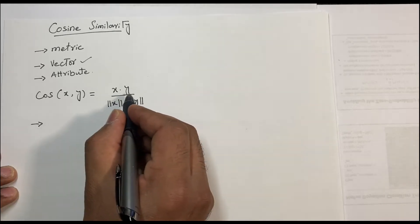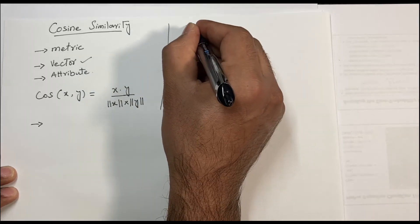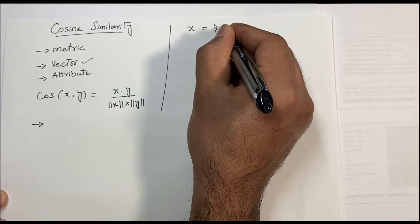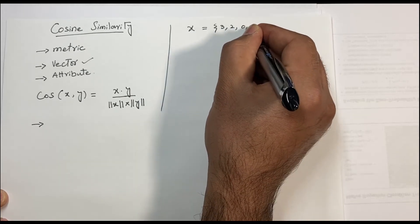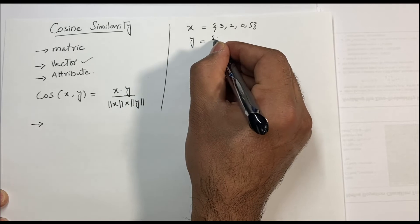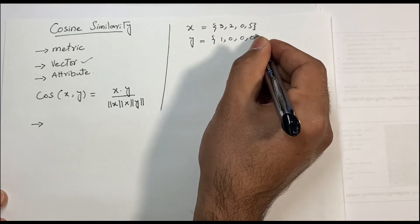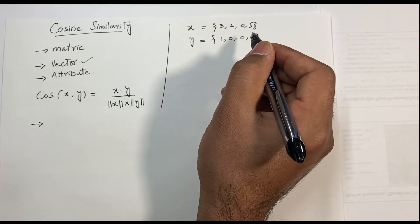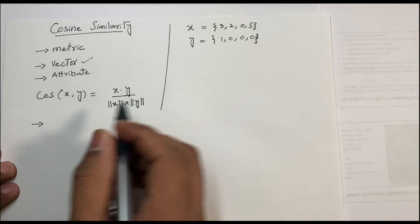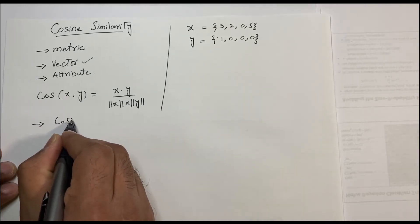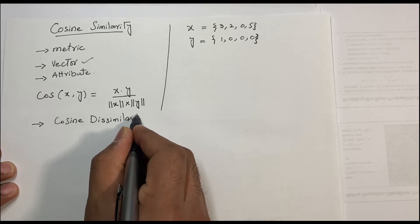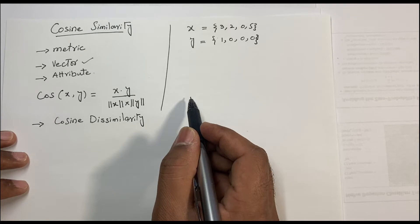For example, we have two documents. Document one is x with values [3, 2, 0, 5] and document two is y with values [1, 0, 0, 0, 0]. We have to find how similar these two documents are using this formula. At the end, we will also see how to find cosine dissimilarity.